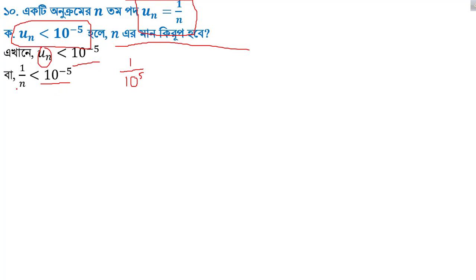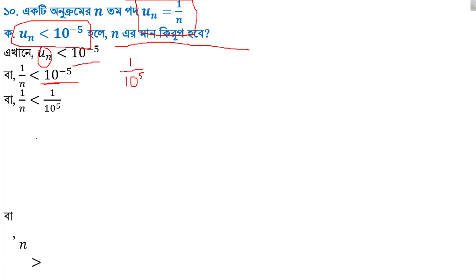5, 9, 10, 10, 10... I will tell you that 1 by n is less than 1 divided by 10 inverse 5, and n is greater than 10 to the power 5.